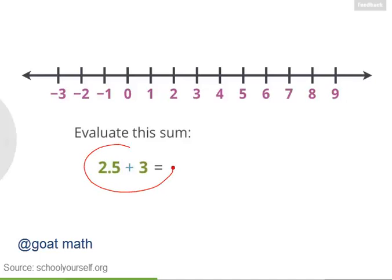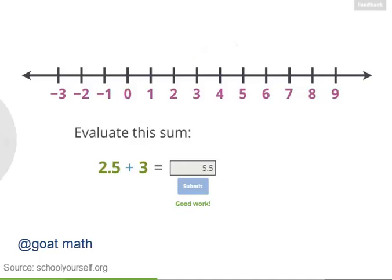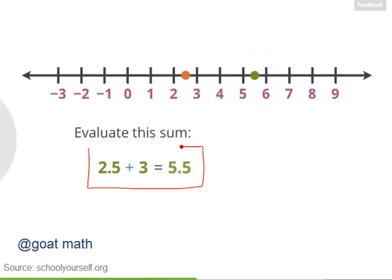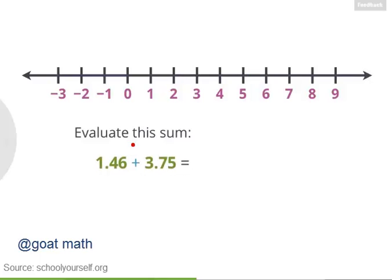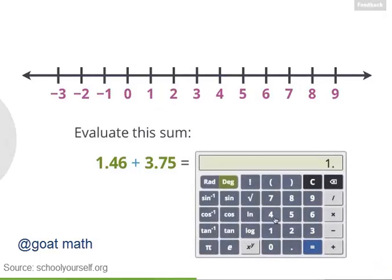Next, let's add decimals. What's 2.5 plus 3? If you start at 2.5 on the number line and move 3 to the right, you end up halfway between 5 and 6. So 2.5 plus 3 equals 5.5. Sometimes adding numbers can be tricky. For example, what's 1.46 plus 3.75? For questions like these, you'll want to use a calculator. Typing in 1.46 plus 3.75 and pressing equals reveals the answer to be 5.21.